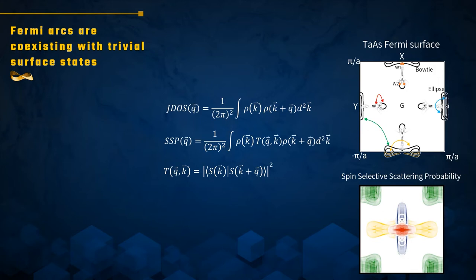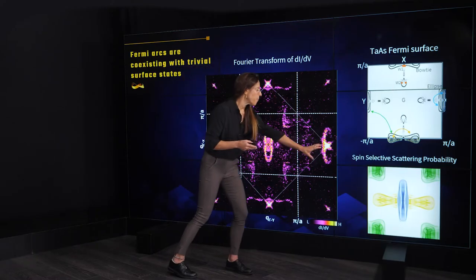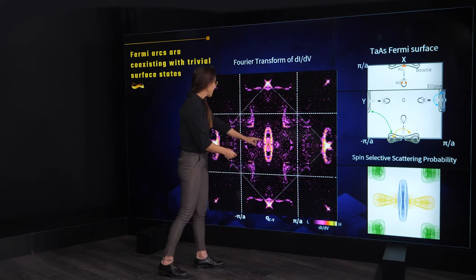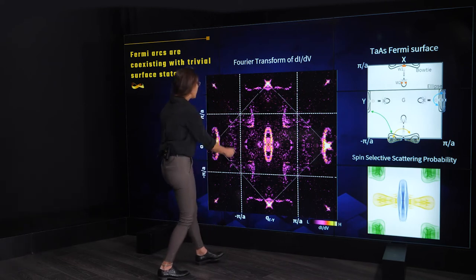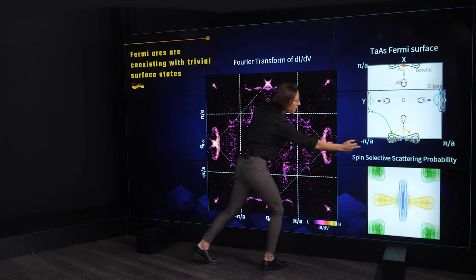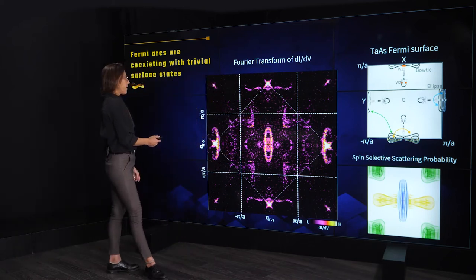What we see here is not exactly the JDOS, but rather the spin-selective scattering probability — the JDOS weighted by the relative direction of the spins of the scattered states. Comparing this spin-selective scattering probability with the measured data, we see that the ellipse-band QPI appears in the center of the image, the bowtie-shaped yellow QPI can also be seen in the center (more clearly at other Bragg peaks), and the green squares at the four corners of the square can be found at the corners of the central square in the image.